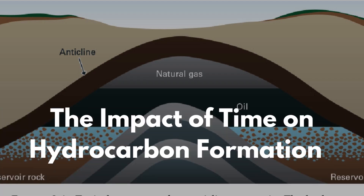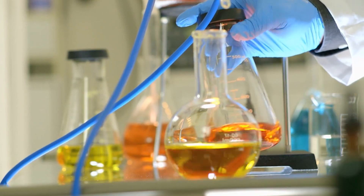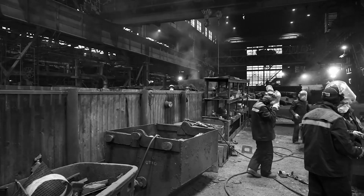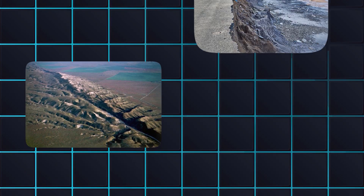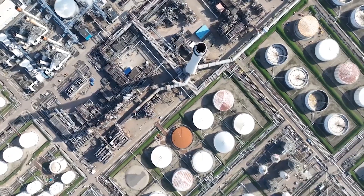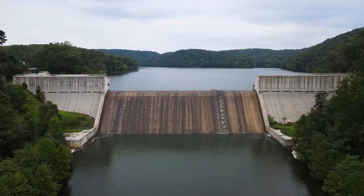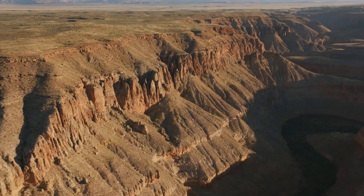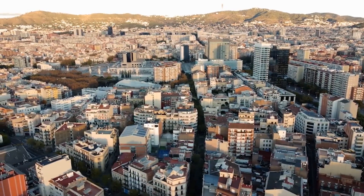The formation of oil and gas reserves is a process that requires millions of years. This time factor allows organic material to undergo the necessary chemical transformations under heat and pressure. Migration pathways develop over millions of years as rock layers fold, fault, and erode. Similarly, the formation of reservoir and cap rocks occurs over extended periods, creating the conditions needed for hydrocarbon accumulation. Geological events such as earthquakes, volcanic activity, and erosion can disrupt reservoirs, causing hydrocarbons to leak or degrade. Geologists use techniques such as radiometric dating and seismic surveys to study the geological history of potential reserves.